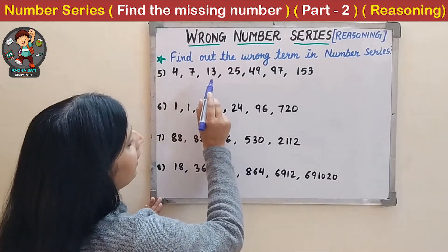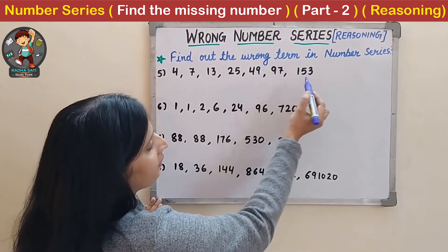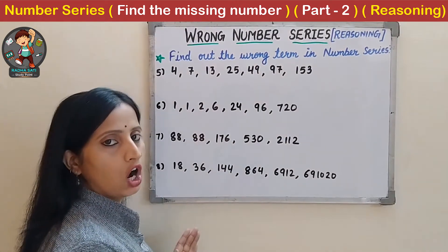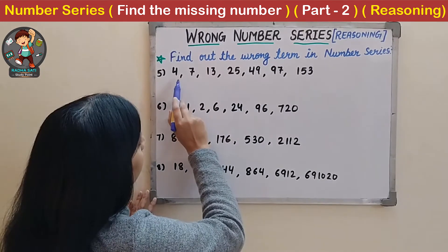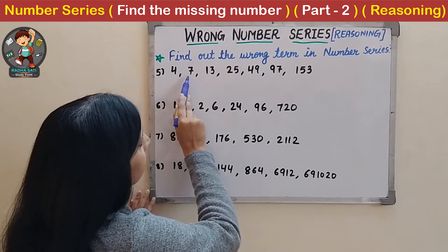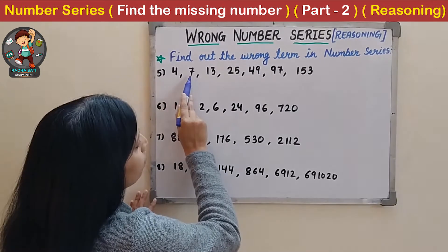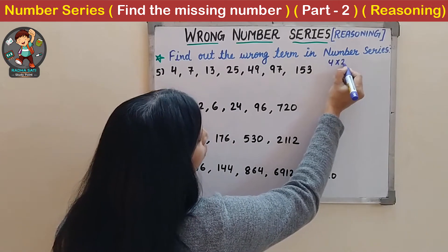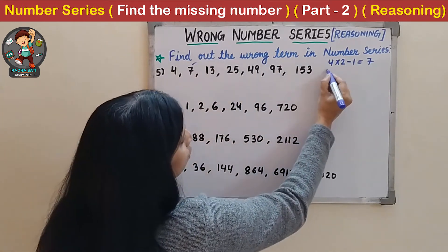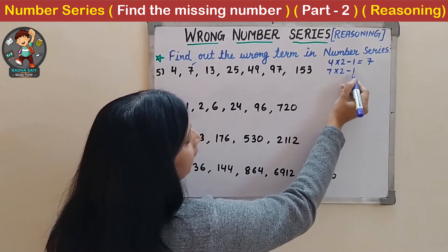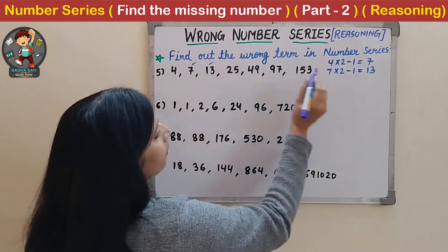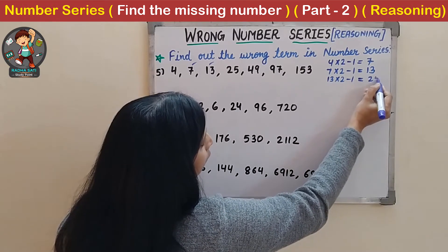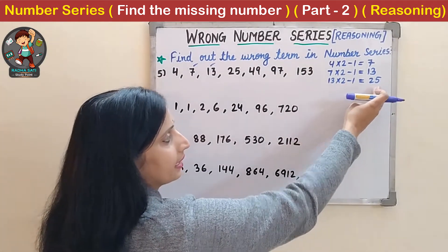Now the fifth question is 4, 7, 30, 25, 49, 97, 153. Every time the numbers are increasing. Let us check for multiplication first. 4 multiplied by 2 minus 1 gives 7. Then 7 multiplied by 2 minus 1 gives 13. Then 13 multiplied by 2 minus 1 gives 25. The pattern is multiplied by 2 minus 1. Till here the series follows this pattern.